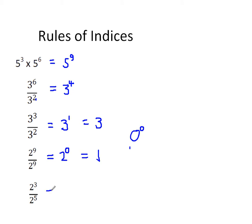What about negative indices? Write out 2 cubed divided by 2 to the power 5 and cancel all you can. You should find two 2s left on the bottom, so the result is 1 over 2 squared. But by our rule of indices, subtracting the indices gives 2 to the power minus 2. A common mistake is to think 2 to the power minus 2 is somehow negative — it isn't. The negative index simply means 1 over, or the reciprocal. So 2 to the power minus 2 is 1 over 2 squared, and 2 to the power minus 8 would be 1 over 2 to the power 8.